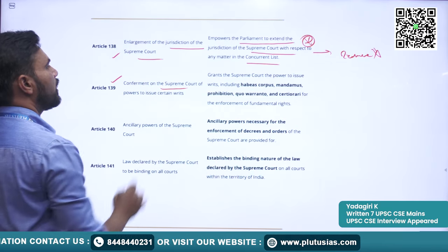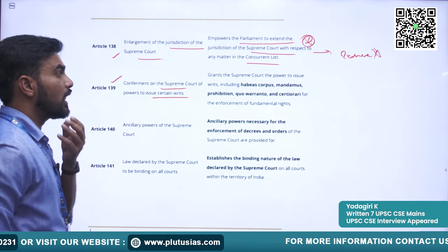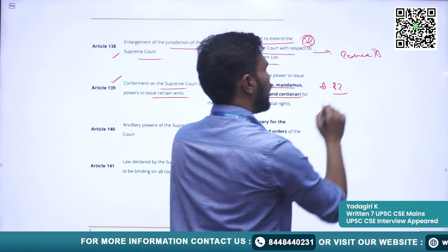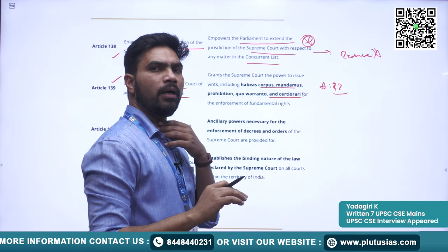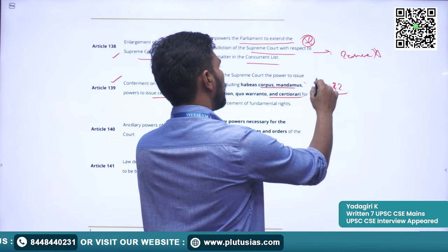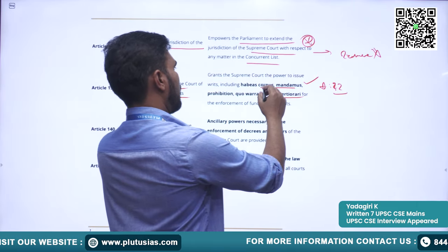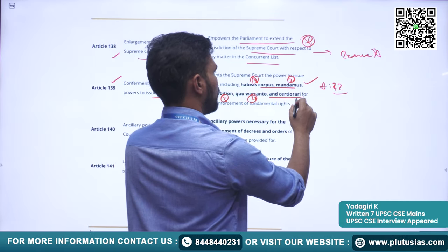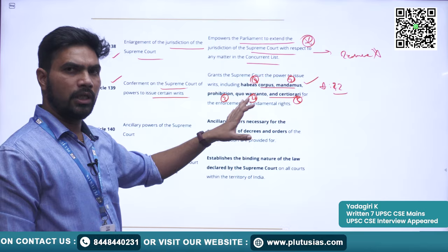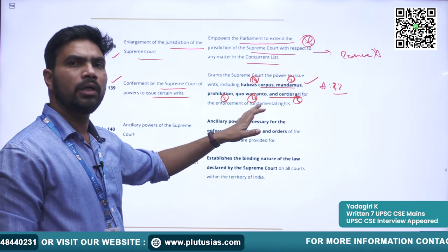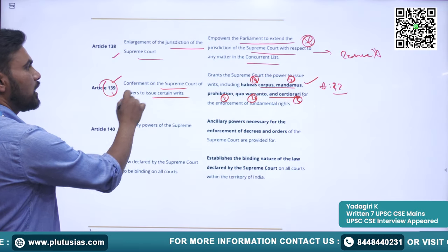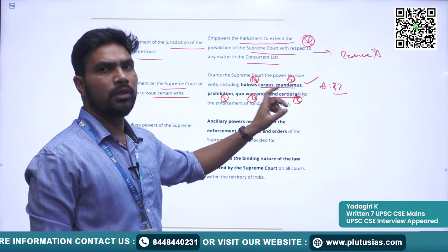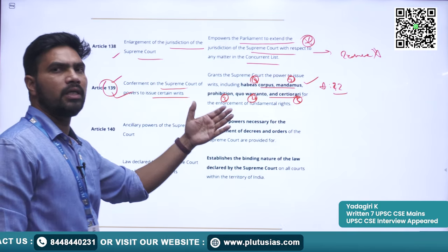Article 139 covers the conferment of power on the Supreme Court to issue certain writs. Under Article 32, the right to constitutional remedies, whenever a fundamental right of a citizen is violated, the Supreme Court can issue writs. The five writs are: habeas corpus, mandamus, prohibition, quo-warranto, and certiorari. Article 139 grants the Supreme Court and High Courts the power to issue writs under Articles 32 and 226 respectively.